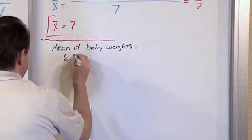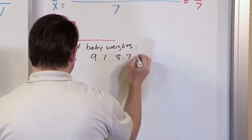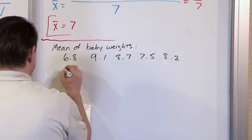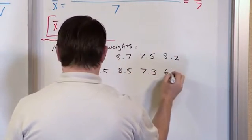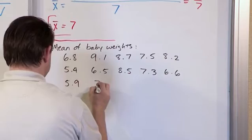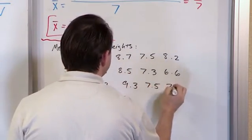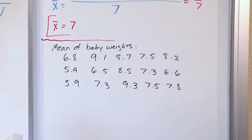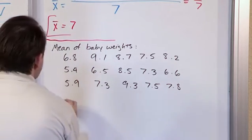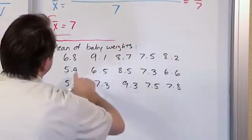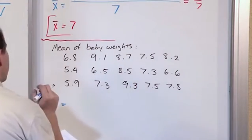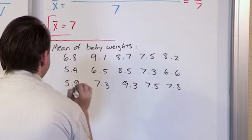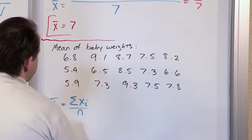So we have baby birth weights: 6.8, 9.1, 8.7, 7.5, 8.2, 5.4, 6.5, 8.5, 7.3, 6.6, 5.9, 7.3, 9.3, 7.5, and 7.8. Now you notice I give you a lot of values here, and that's on purpose. So what we're going to have is the sample mean. Notice it would be very lengthy to write out 6.8 plus 9.1 plus 8.7 and so on, so we're going to use our shorthand notation — the sum of the x values over n, which is the number.